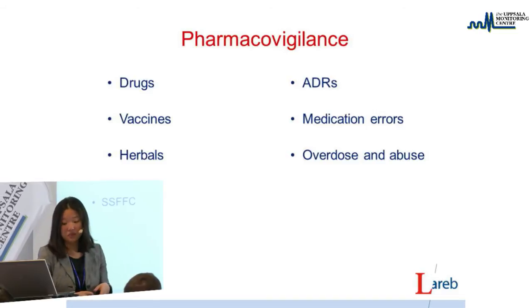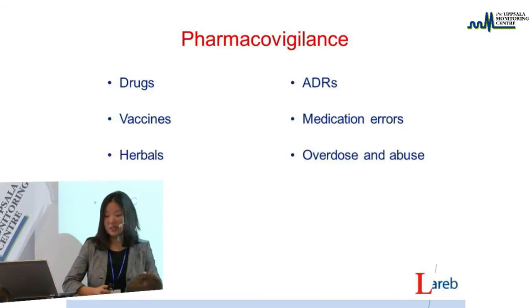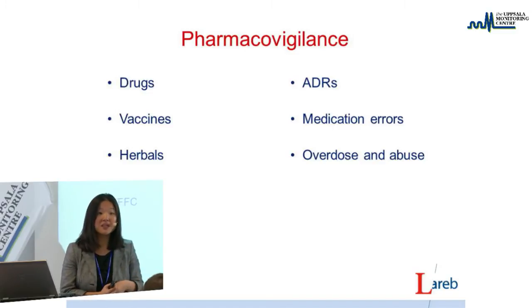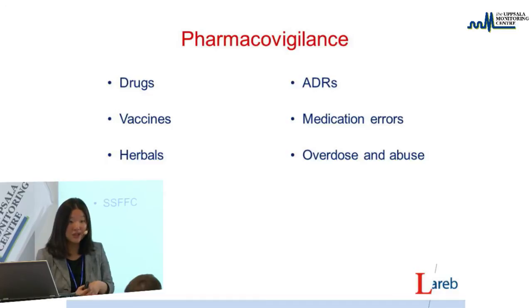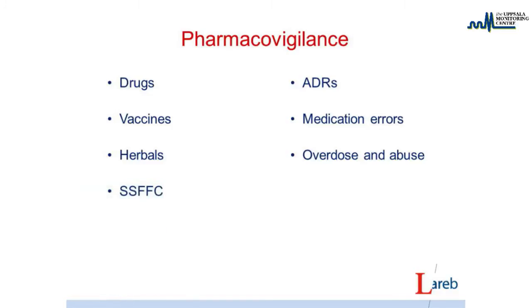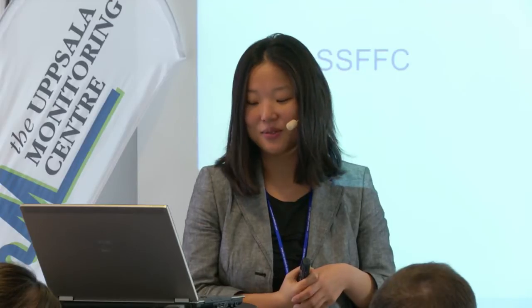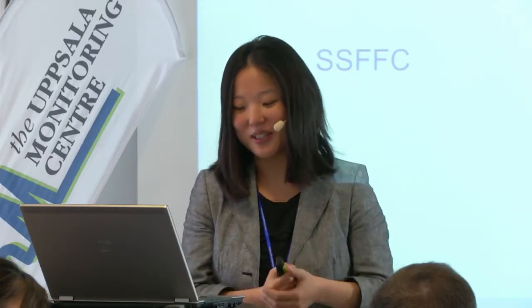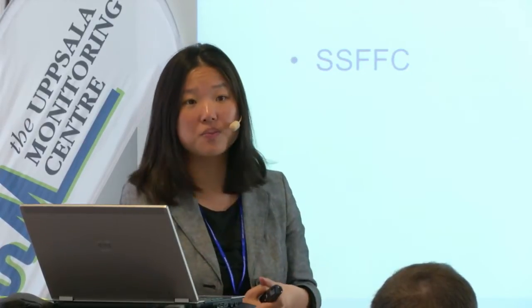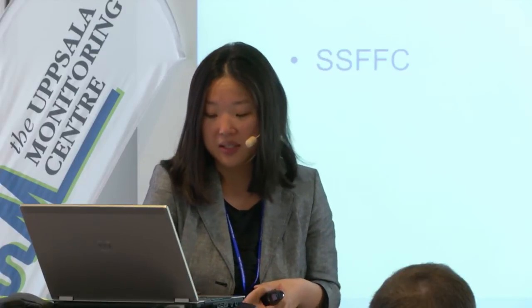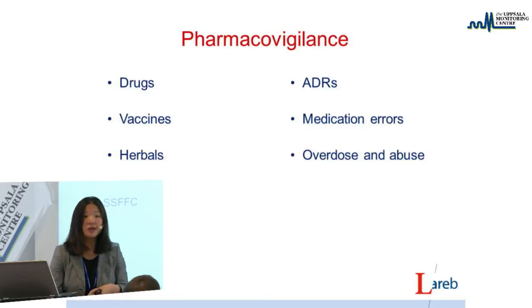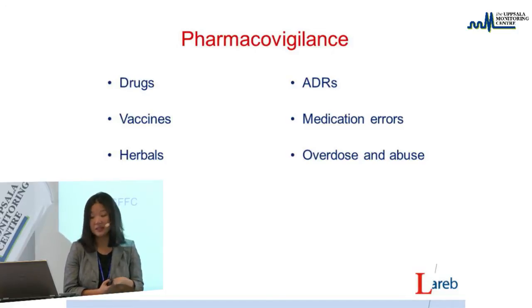The scope of pharmacovigilance is increasing. If you want to capture these new things, you need to ask for it in your form. You are looking at traditional drugs, but more and more PV centers are also involved in vaccine vigilance. In some countries the use of herbals is very widespread. Some countries also have a lot of problems with SSFFC - spurious substandard falsified counterfeit drugs. We also look at ADRs, medication errors that sometimes lead to ADRs, and overdose and abuse of drugs.